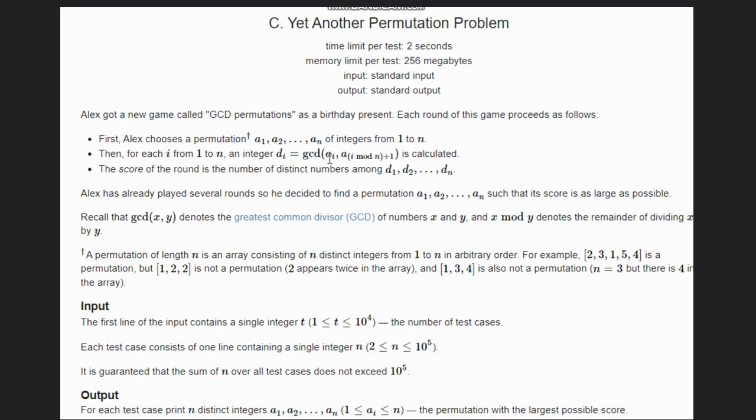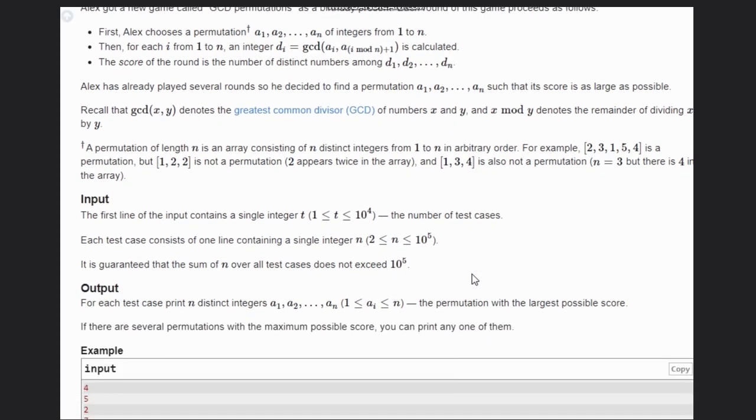This basically means the number of the current one and the next one. The score of the round is the number of distinct numbers among d1 to dn. We have to calculate the number of distinct di's, so that will be the score we have to maximize.